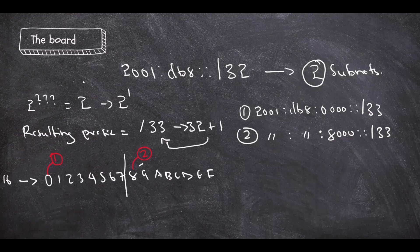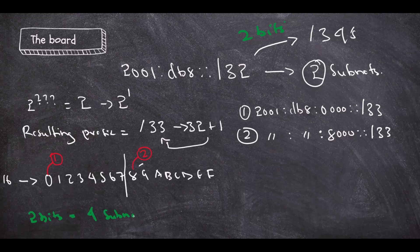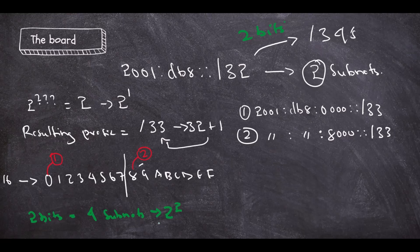What if we split this /32 into /34s? From /32 to /34 is two bits. If we're using two bits, we're going to have four subnets, because 2 to the power of 2 equals four.